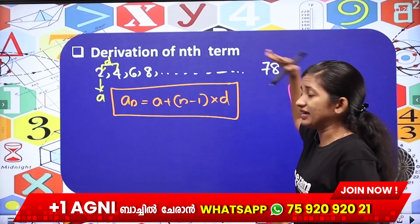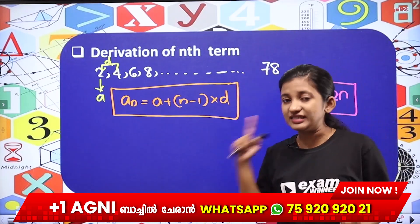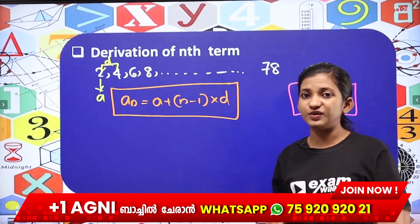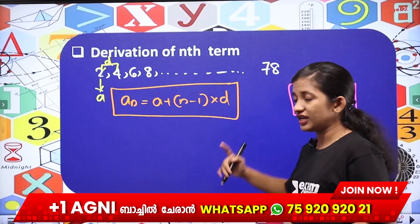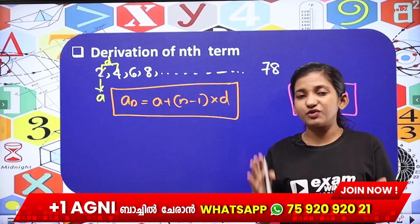We have the algebraic expression. What is the algebraic expression? A plus n minus 1 into d. We use this algebraic expression.